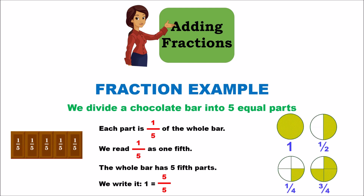Here are some more examples: a fully shaded circle is 1; half shaded is 1 by 2. One quarter shaded is 1 by 4, and three quarters shaded is 3 by 4.